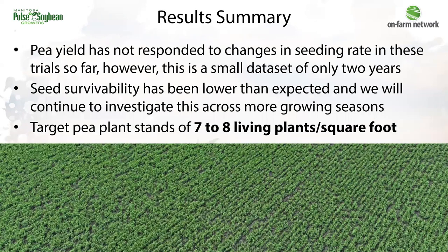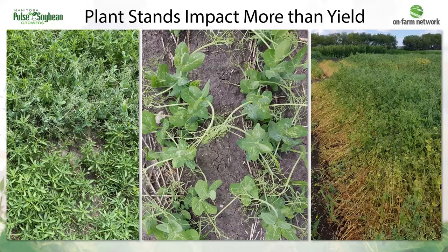In summary, pea yield has not changed with changes in seeding rate at this field scale on-farm so far. Seed survivability — the amount of living plants establishing — has been lower than expected in peas, and we're interested in investigating that more over more growing seasons. The recommendation remains to target seven to eight living plants per square foot to maximize yield. Seven to eight plants per square foot is ideal since lower plant stands make weed control much more challenging — peas have a harder time knitting together, impacting both weed control and standability. On the flip side, seeding rates that are too high will also lead to lodging. Seven to eight plants per square foot is that happy medium where yield is maximized, plants are standing up, and the crop is very competitive against weeds.